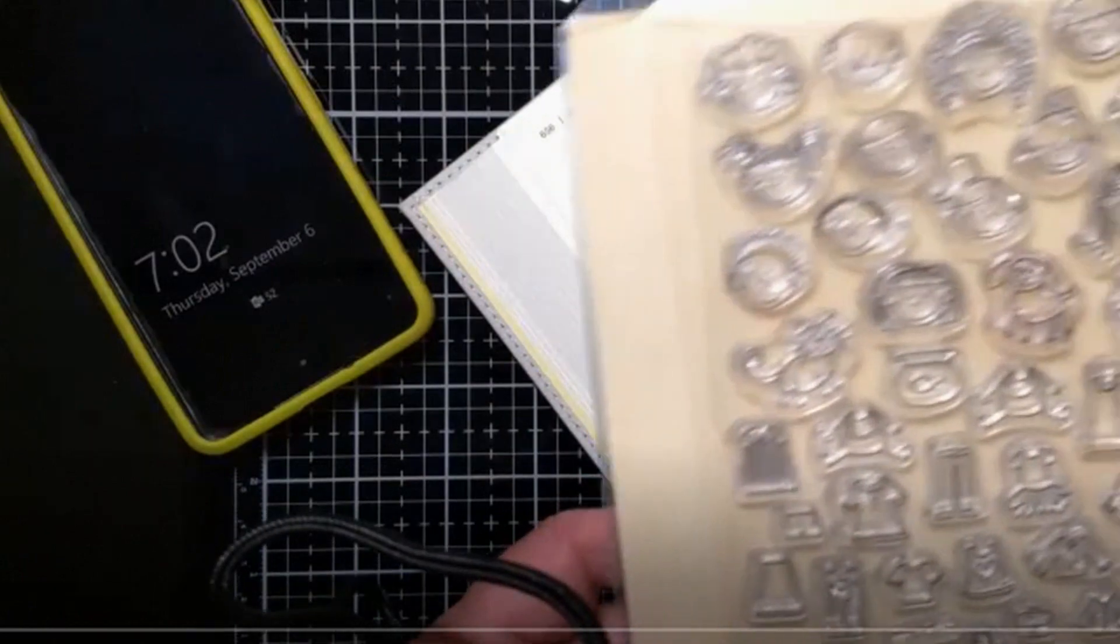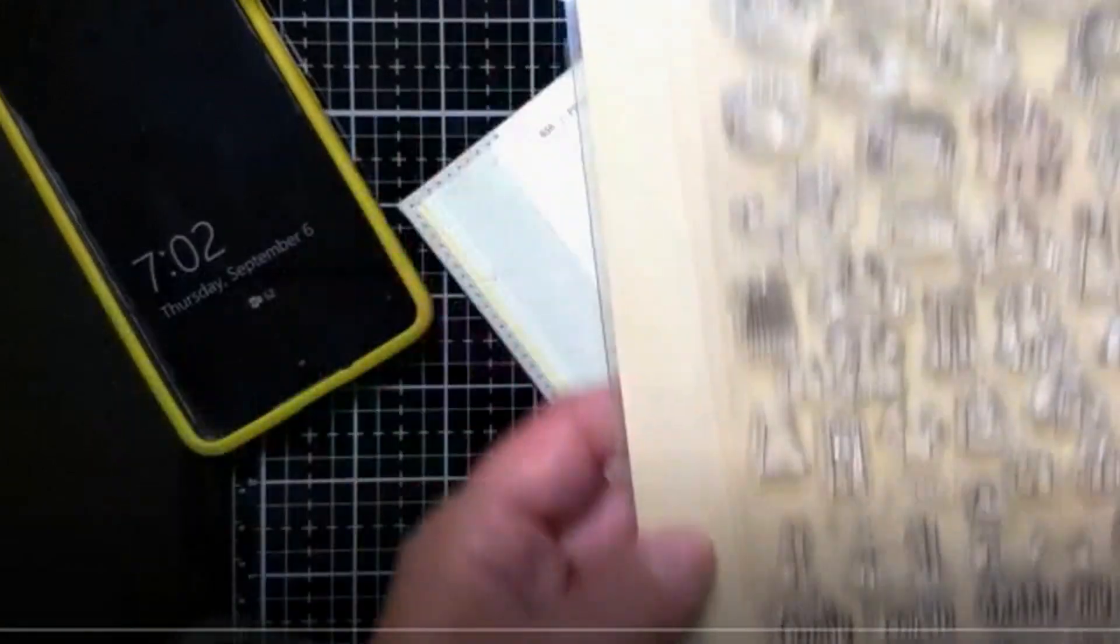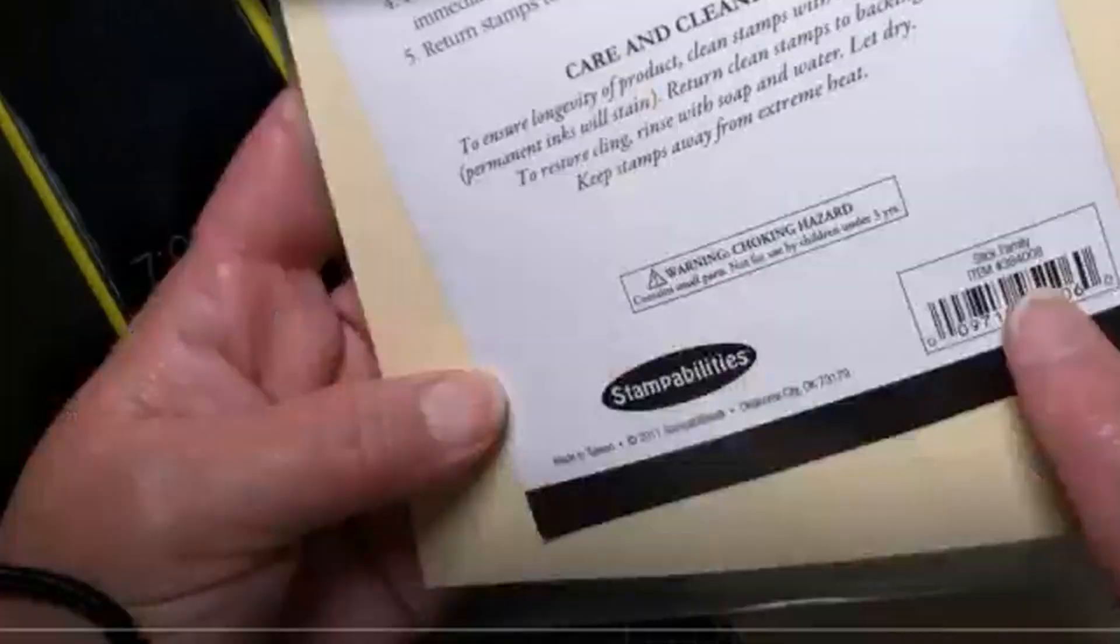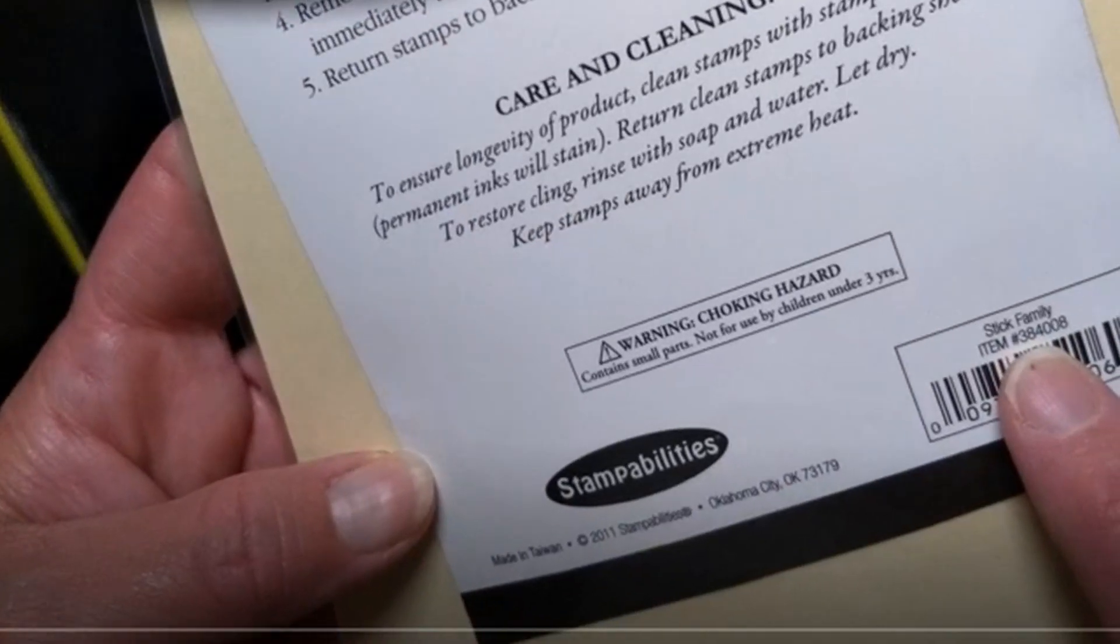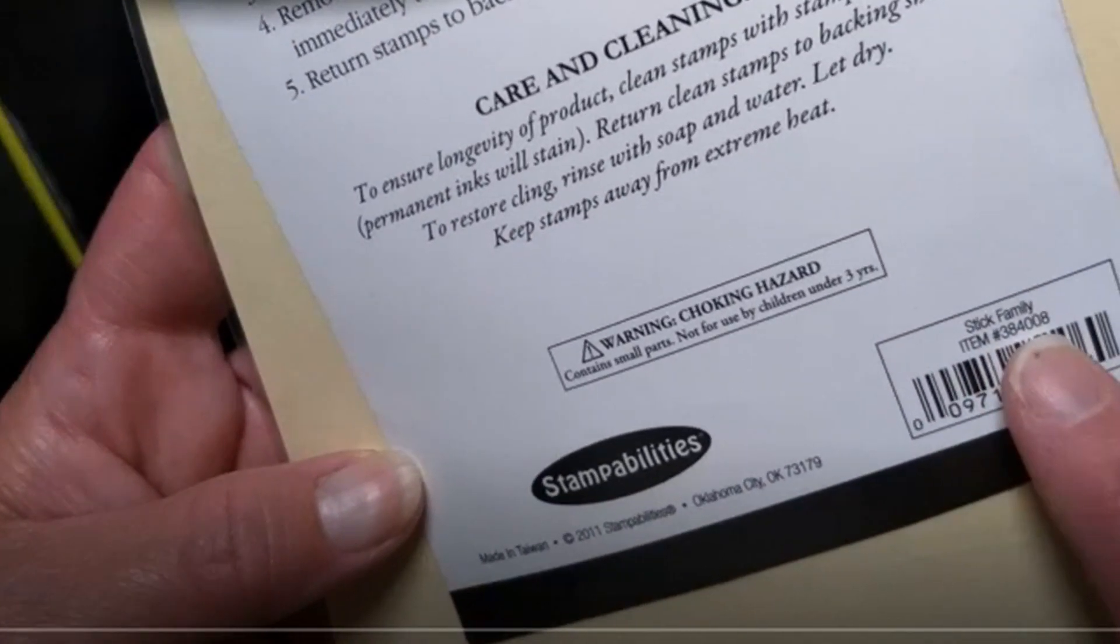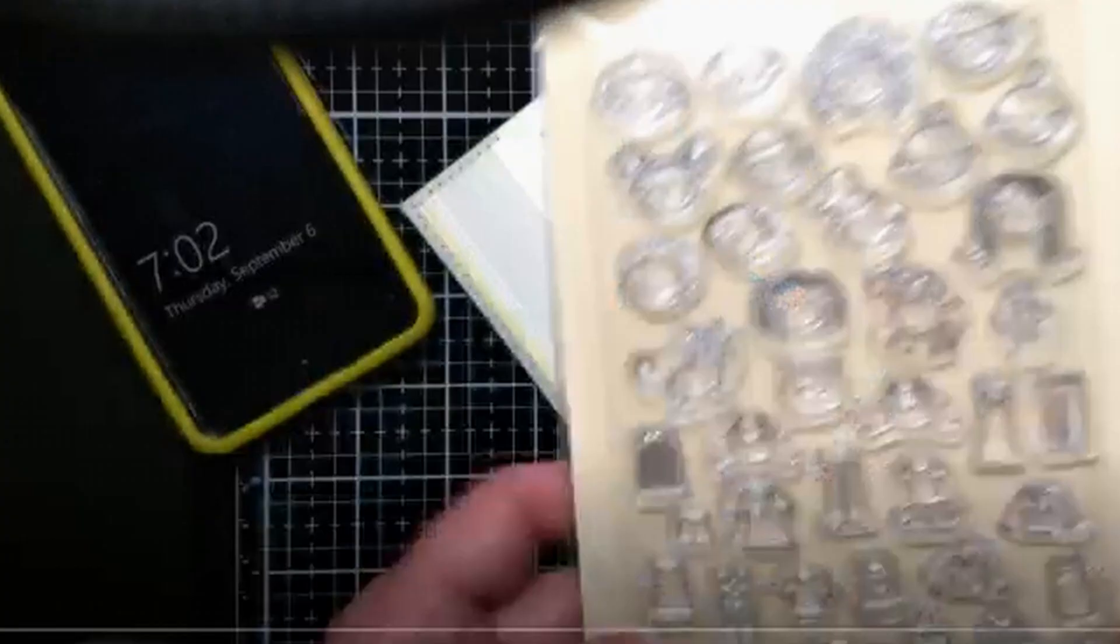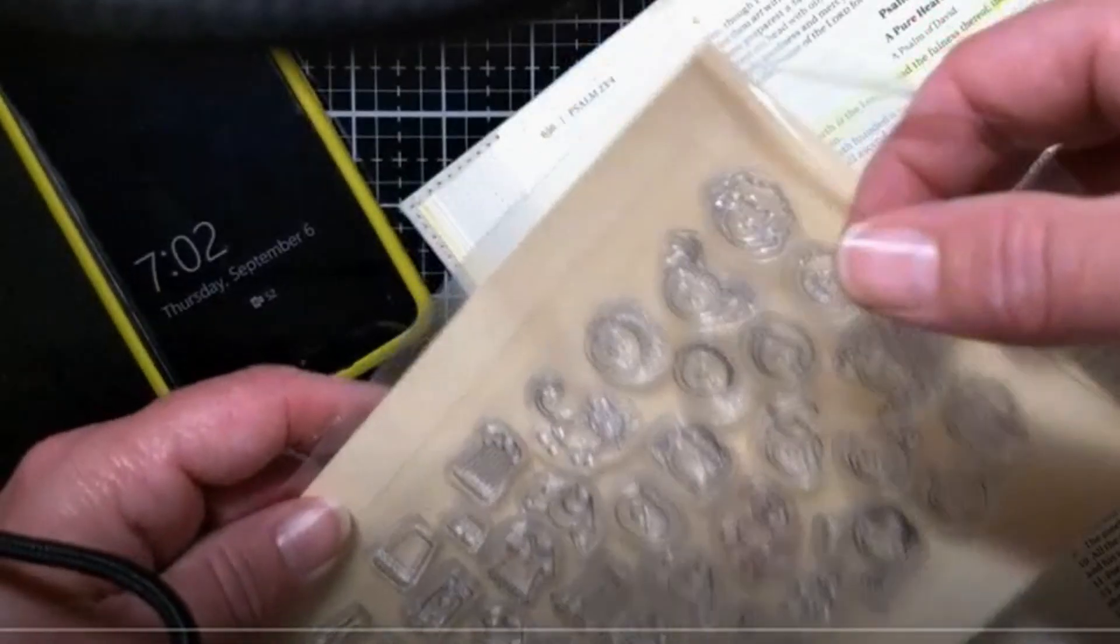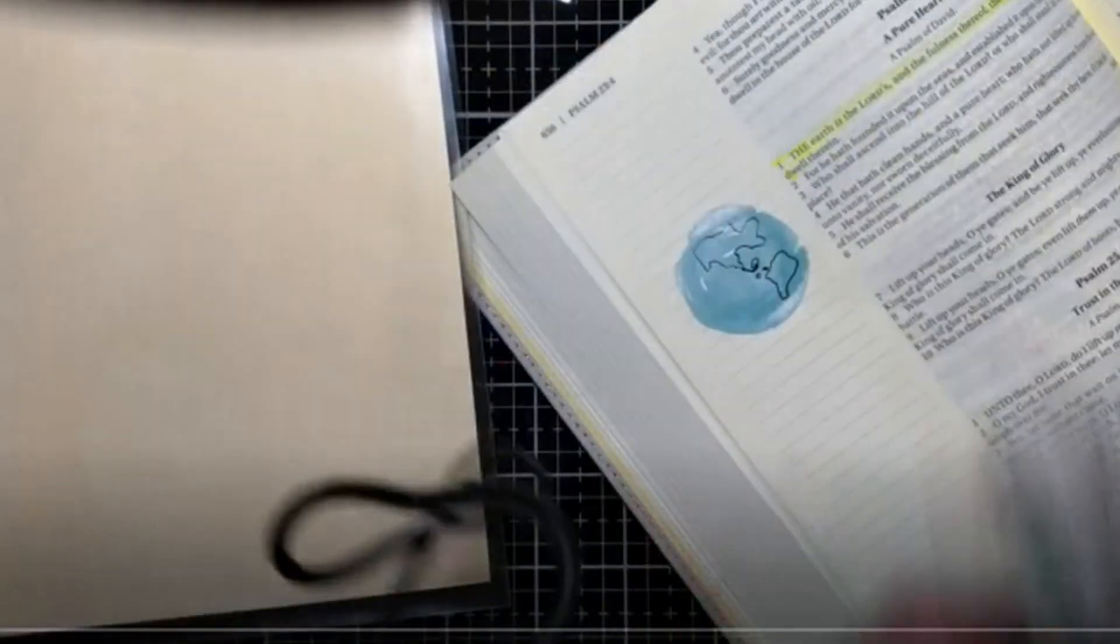I'm going to use this stamp set with these cute little faces. This is a Stampability stamp set called Stick Family, item number 384008. I think I purchased this in store at Hobby Lobby but I'm pretty sure you can find it online too.